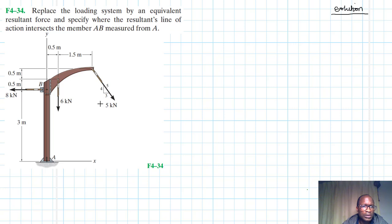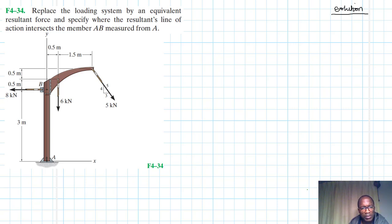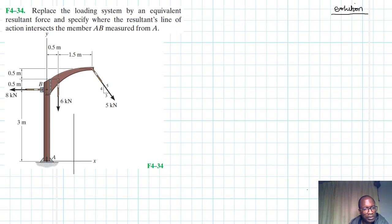We have been asked to replace the loading system by an equivalent resultant force and specify where the resultant's line of action intersects the member AB measured from A. So let me just draw what we are talking about. This time around the structure is oriented differently from the other cases that we are solving, but that is still fine. So we are going to find the resultant force and specify where the resultant's line of action intersects the member AB measured from A.